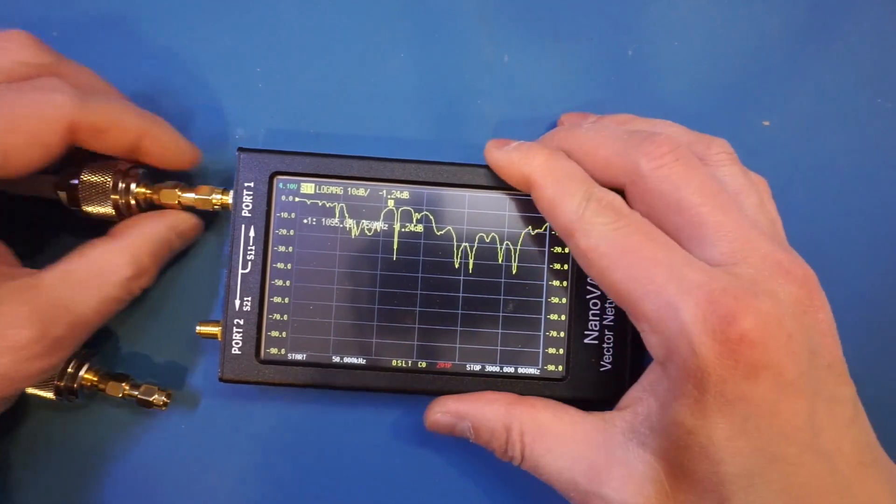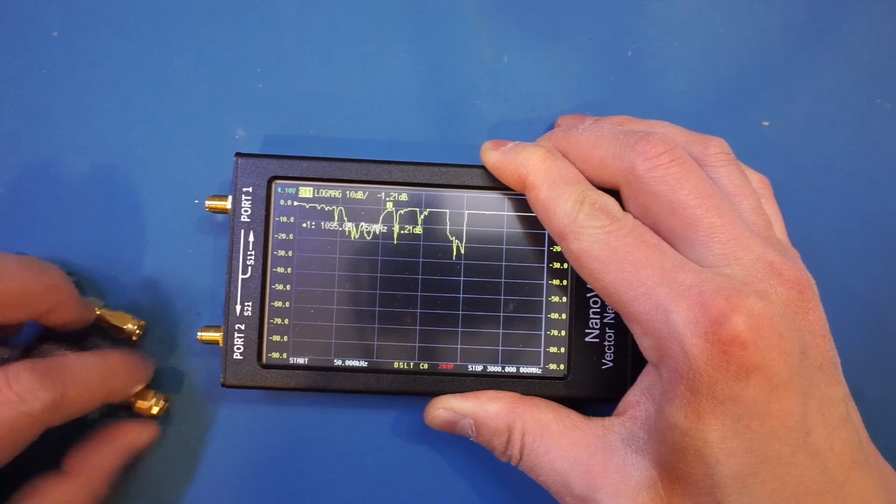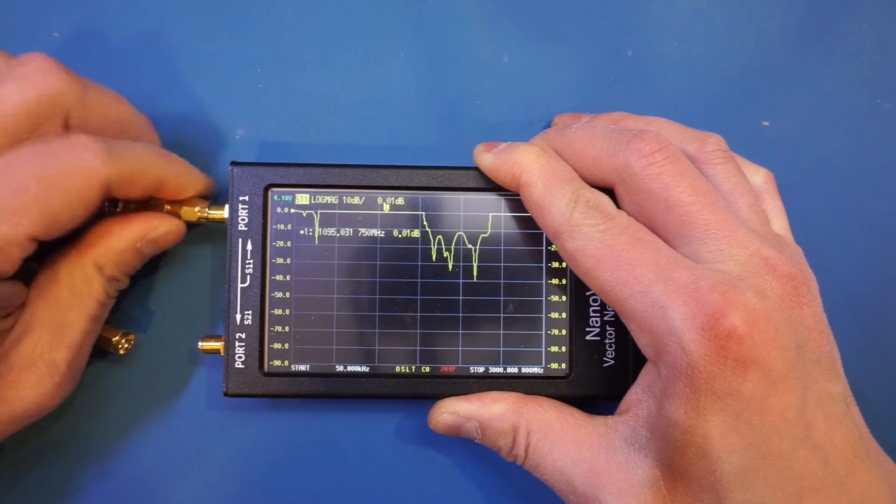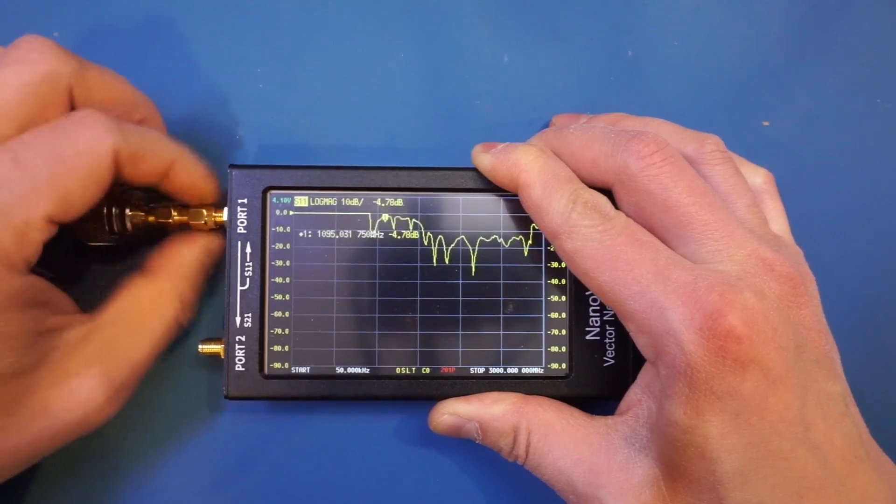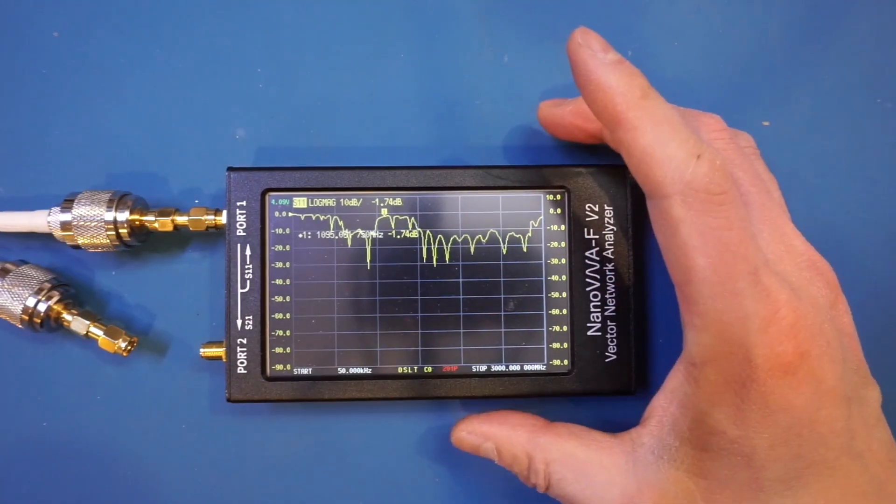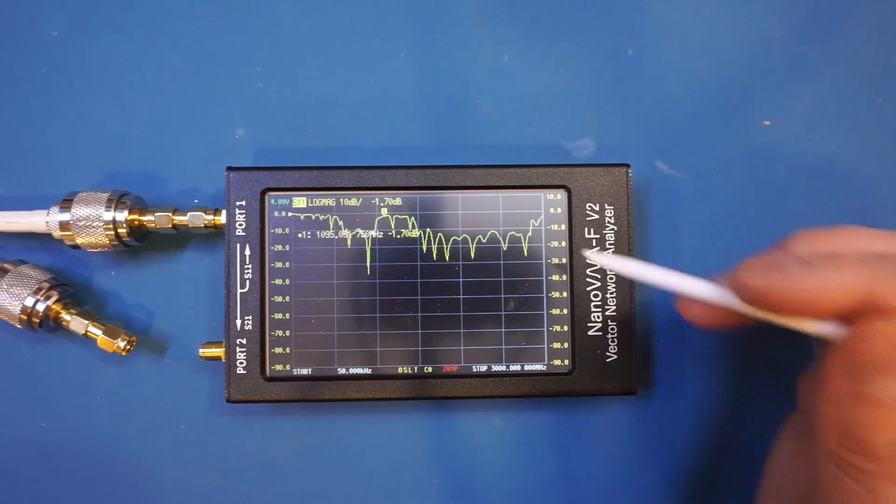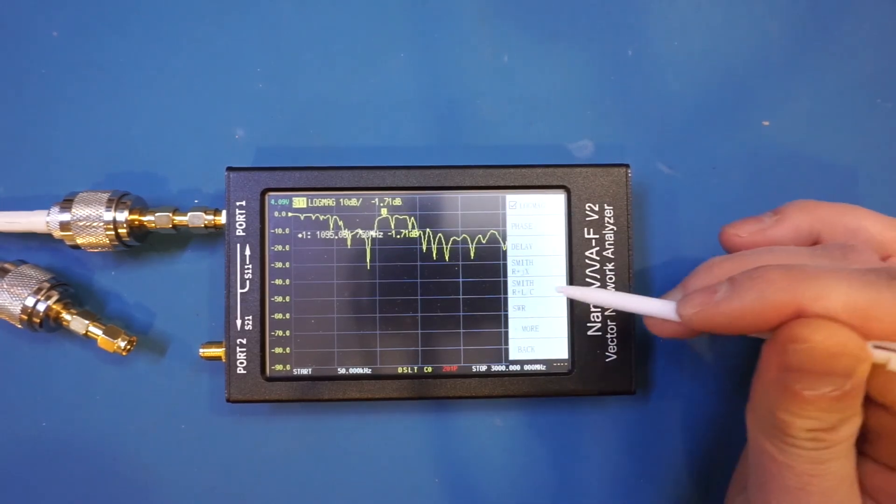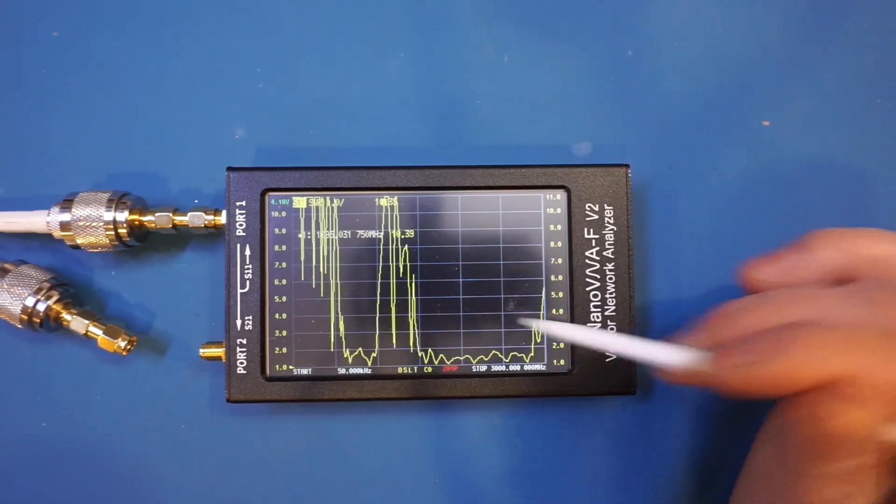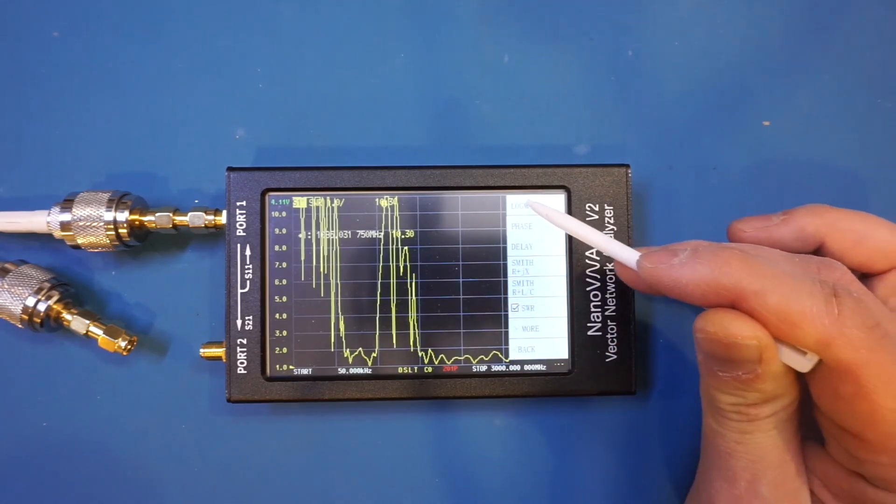So now let me unhook this one and we will hook this one in the other channel. And you can see that we get roughly the same frequency response and let's just change it briefly to SWR view and you can see indeed that we're seeing similar patterns between this channel and the first channel that we measured.